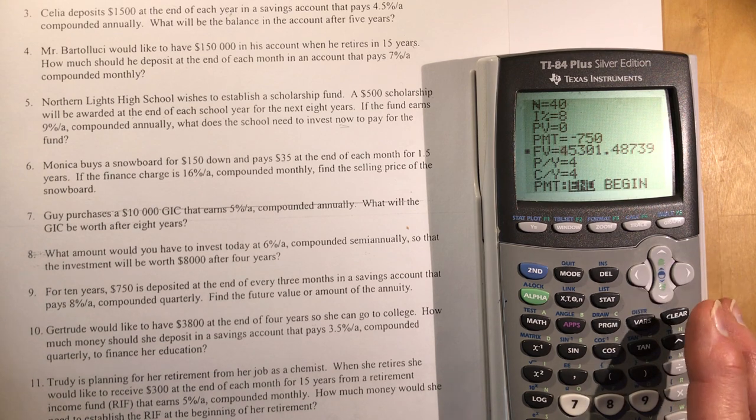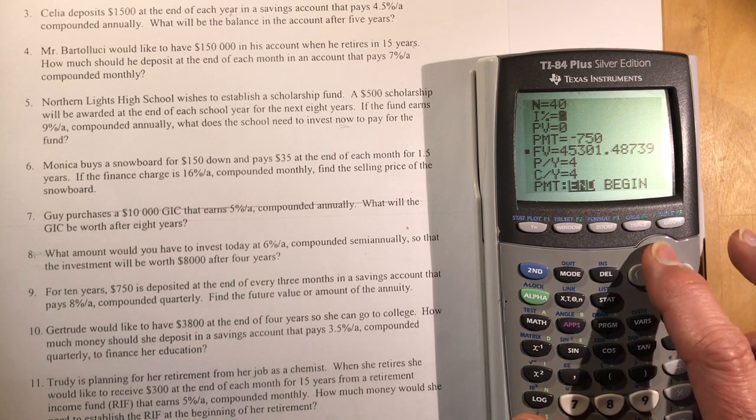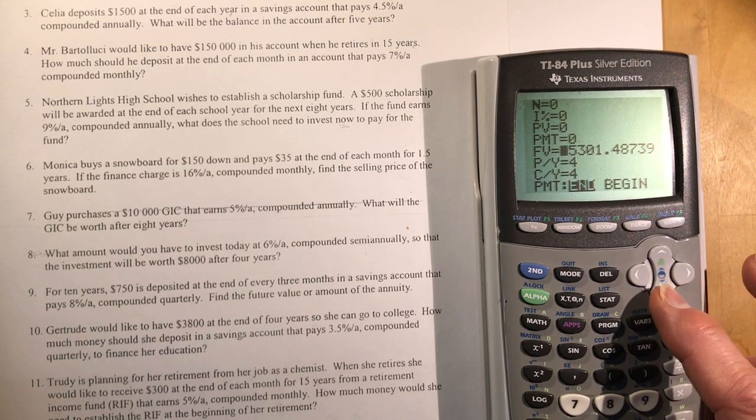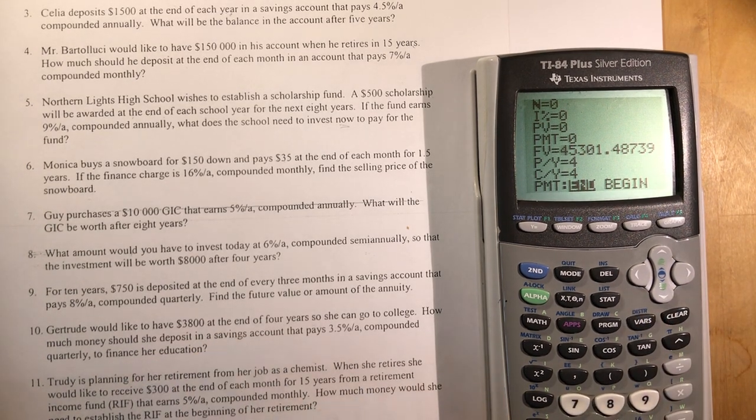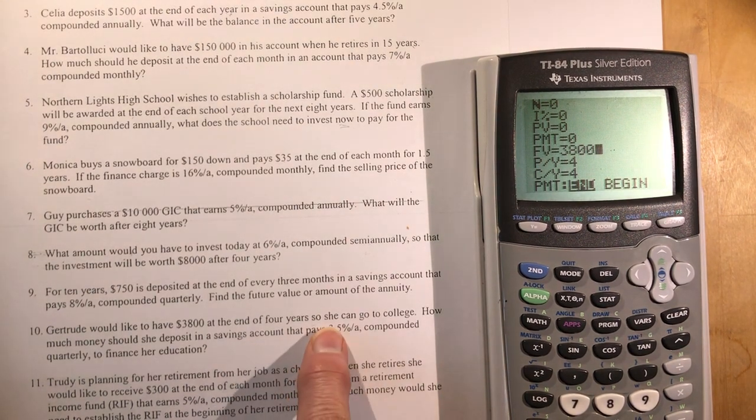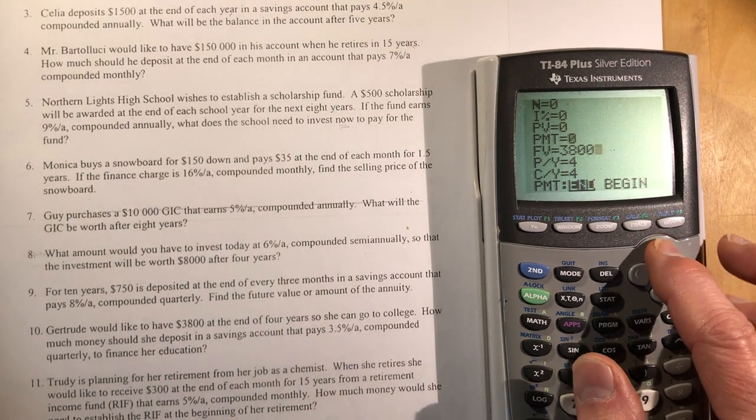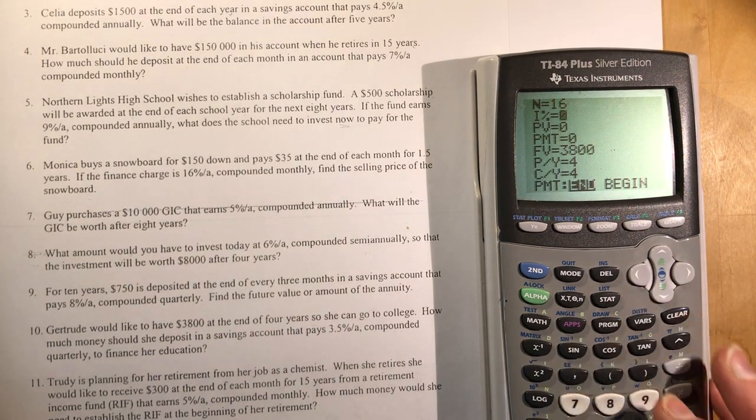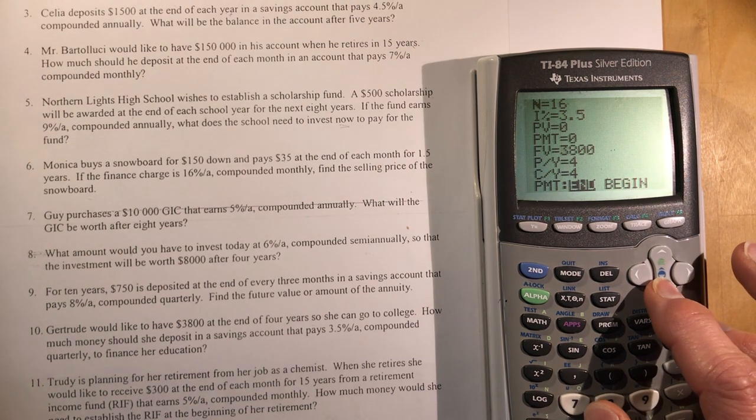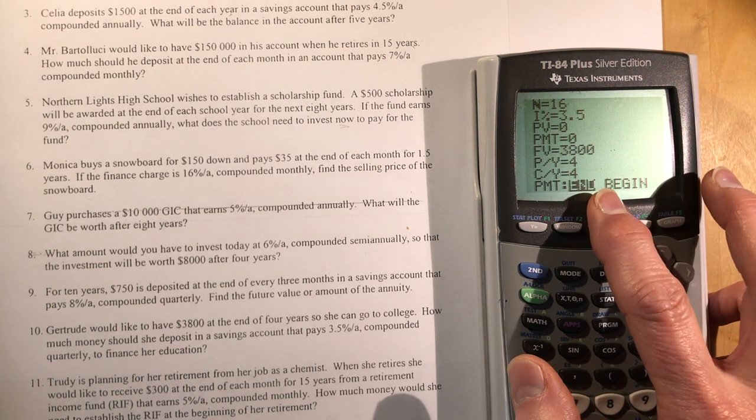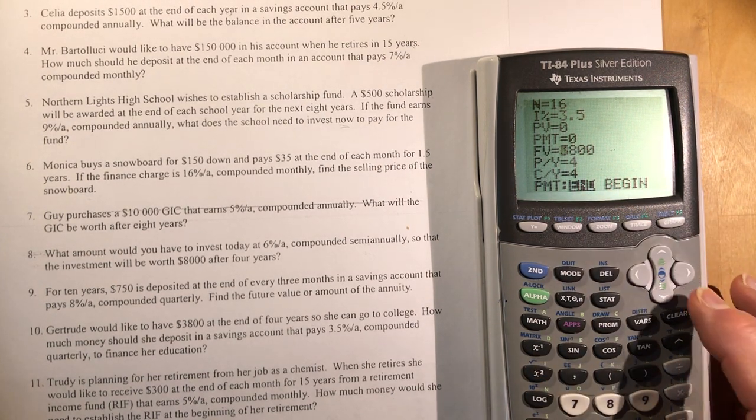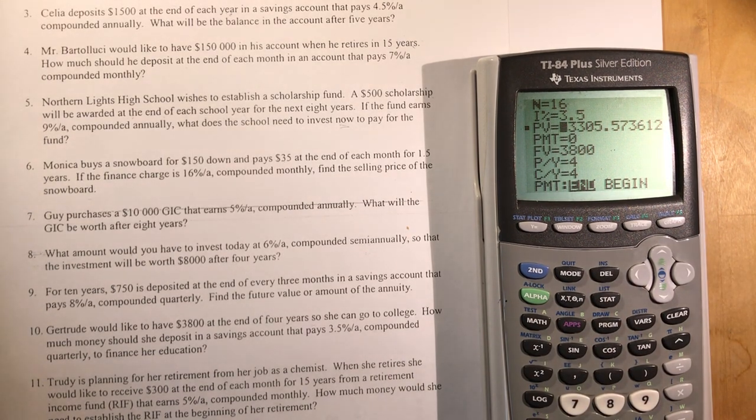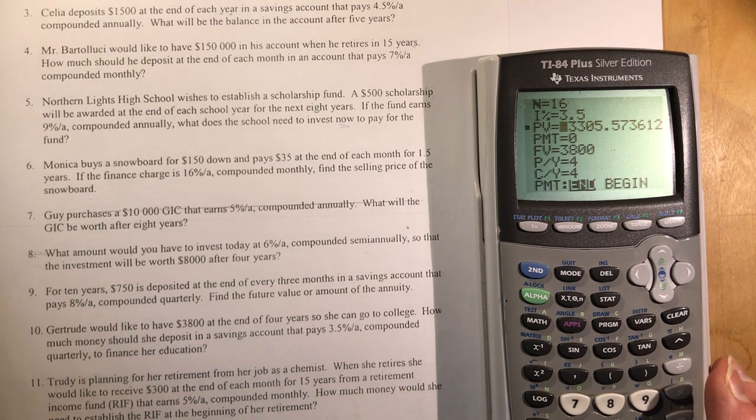Gertrude would like to have $3,800 at the end of four years to go to college. That's a future value. $3,800 at the end of four years compounded quarterly. Four times four gives me 16. The I value is 3.5 compounded quarterly. How much should she deposit now? $3,305.57.